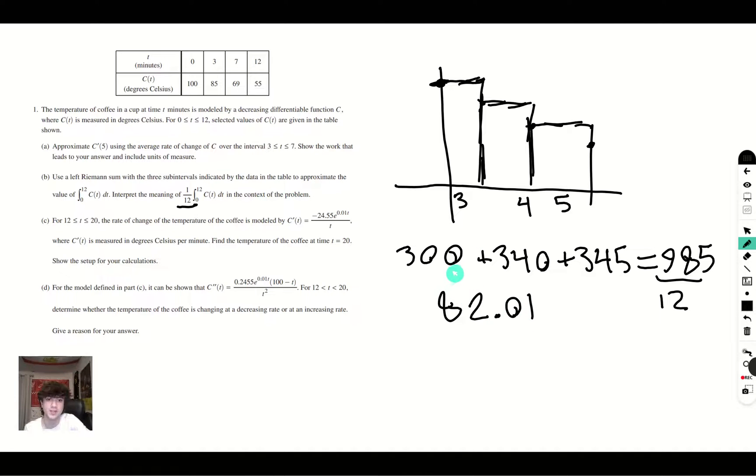And what this means in the context of the problem is this is the average temperature. And that makes sense, because as we see, it goes from 100 to 55. 82.01 is somewhere in between those two values. So we can say that that is going to be the average, the approximation of the average.